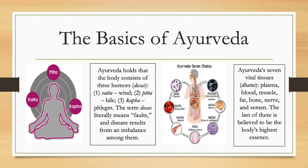Ayurvedic drugs consisted of animal, vegetable, and mineral substances. Ayurveda itself had eight different branches: internal medicine; diseases of the eye, ear, nose, throat, and mouth; surgery; toxicology; the treatment of demonic seizures, which some people call psychology; pediatrics; geriatrics; aphrodisiacs; and reproductive medicine.